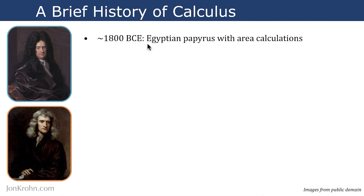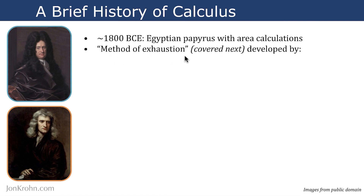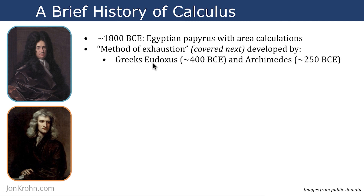We have evidence dating back to about 4,000 years ago, in 1800 before the Common Era. We have an Egyptian papyrus from back then with area calculations on it, so we know that something like integral calculus has been around for at least about 4,000 years, potentially longer. The method of exhaustion was developed originally by the Greeks Eudoxus and Archimedes in 400 and 250 BCE respectively — over 2,000 years ago.